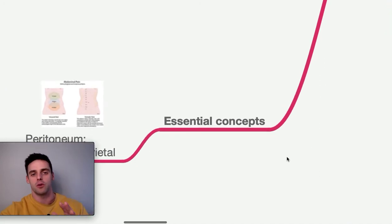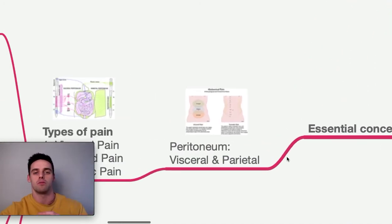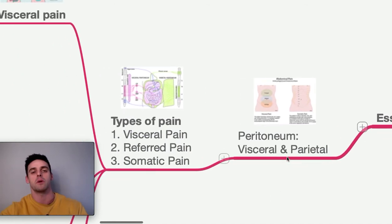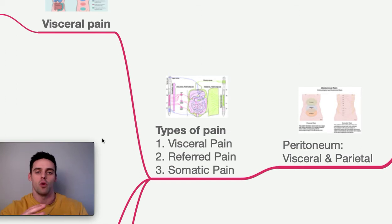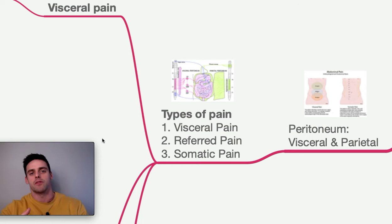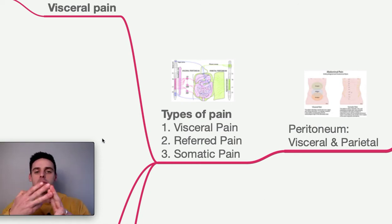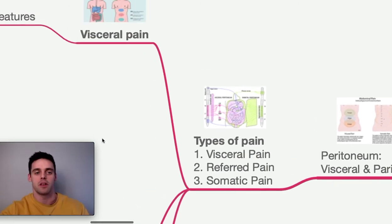Moving on to essential concepts — the anatomy and physiology. Try not to skip this because it really helps to understand what might be going on with a patient's abdominal pain. There are three types of abdominal pain: visceral pain, referred pain, and somatic pain.